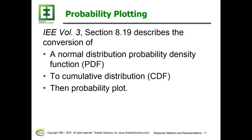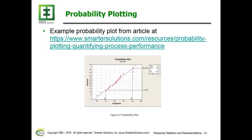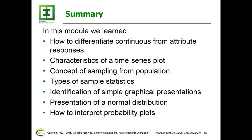A probability plot is a very beneficial methodology to describe what's happening within a population. In Section 8.19, I talk about how a normal probability plot — the probability density function — can be transformed into a cumulative distribution form and then into a probability plot. A link is provided here with more detail about this particular graphic.